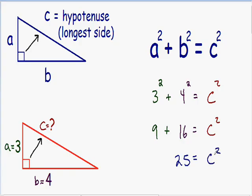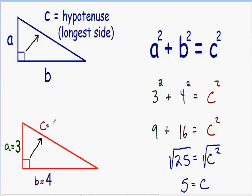Now we need to get c by itself. Notice that c is being squared, so in order to get c by itself we need to do the opposite of squaring, which is square rooting. I'm going to square root both sides. On the left-hand side, the square root of 25 is just five, and that equals the square root of c squared, which is just c. So we have found the length of our missing side: c equals five.